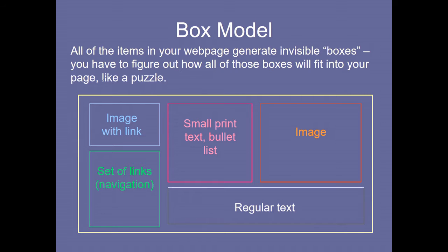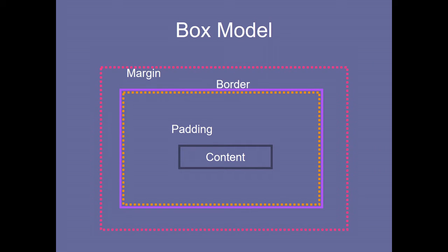When talking about the box model, you should know the meaning of margin, border, padding, and content. Content is at the center. The space inside the border is called padding. Take an example from a bedroom — if you want to adjust a bed, the distance you keep from the wall is the padding, because the wall is the border.